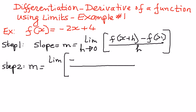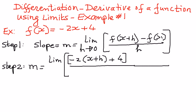Negative 2 times the quantity x plus h, plus 4 — that is the given function with x replaced by x plus h — minus the given function negative 2x plus 4, close brackets, the whole thing divided by h, as h approaches 0.